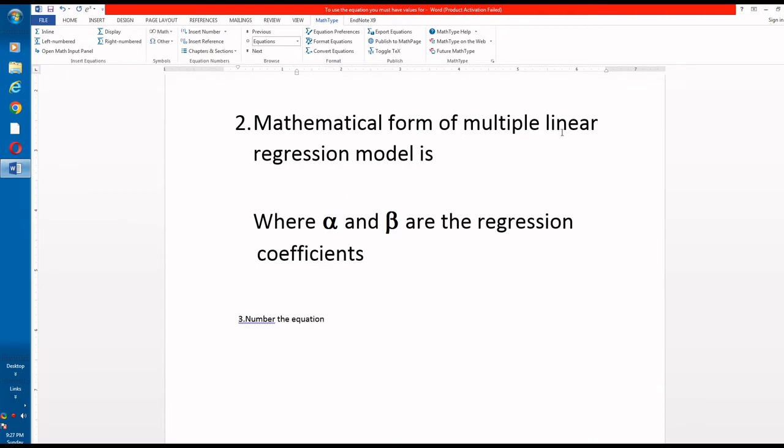Mathematical form of multiple linear regression model is where alpha and beta are regression coefficients. So we have two paragraphs and we want to display our equation in this position. So this position is between two paragraphs. For this purpose, use display.